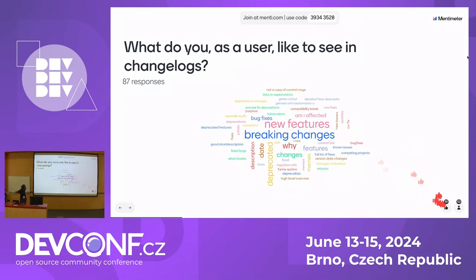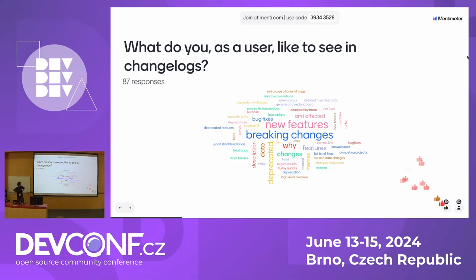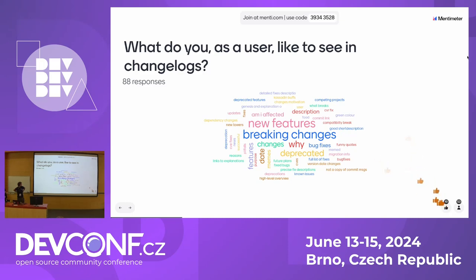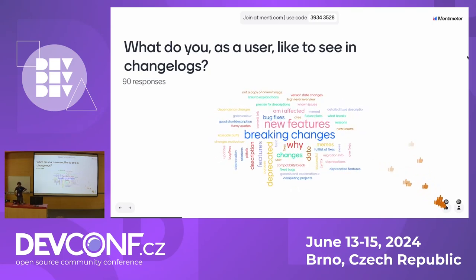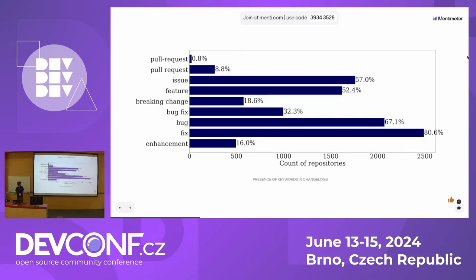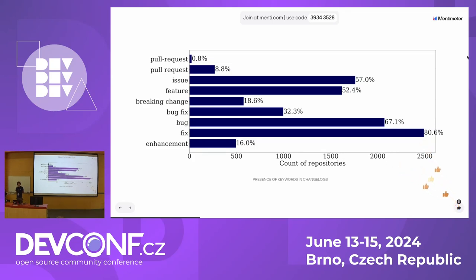It's starting to be smaller and smaller. CVEs, fixed bugs, deprecation — that's a good one. Known issues, future plans. Not a copy of commit messages — I think we will get to that. And actually I was looking into the presence of these most popular keywords in the changelogs at those repositories, and the most popular were definitely fix, bug, and feature. You can see those percentages — I think it makes sense.